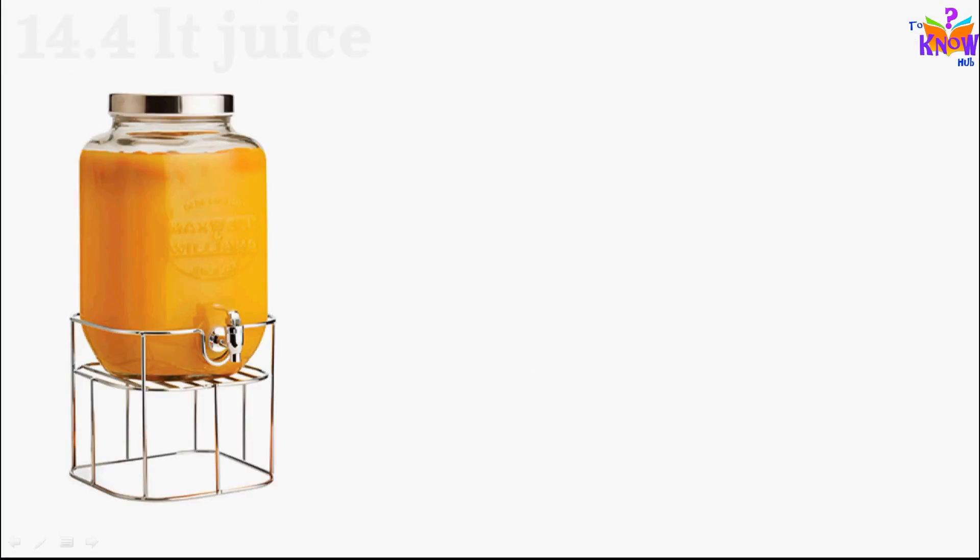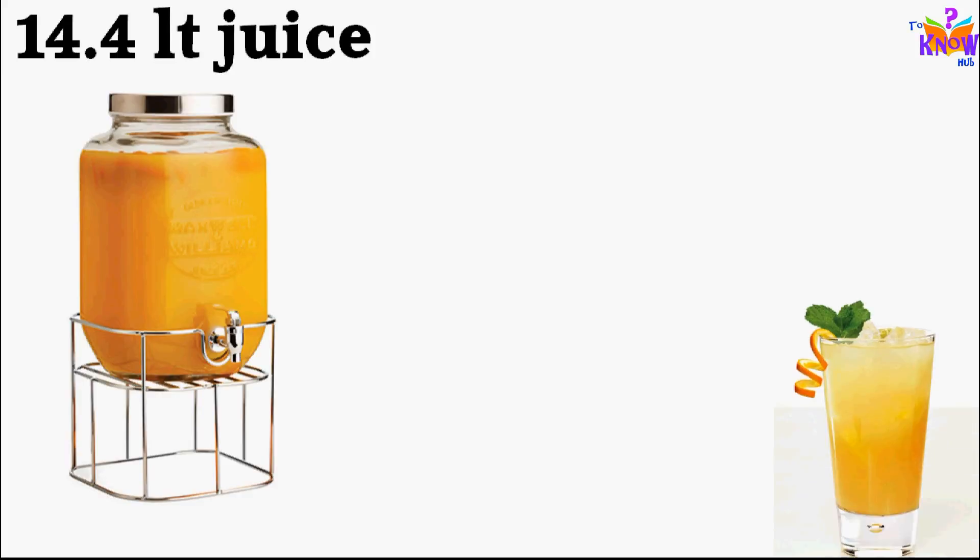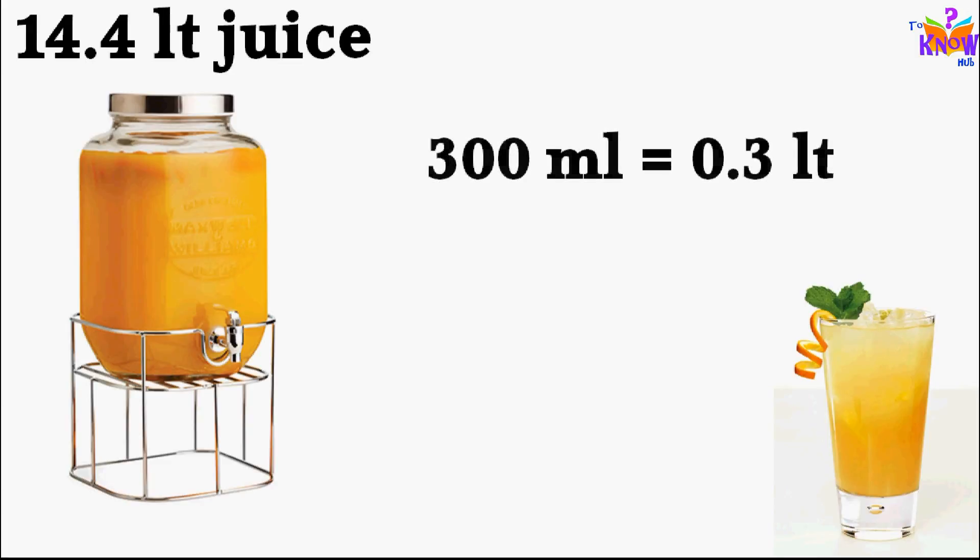Now what if the divisor has decimal too? Like you have 14.4 liter of juice. You are serving 18 300 ml glasses, means 0.3 liter in each serving. We know thousand milliliter equals to 1 liter, so 300 ml means 0.3 liter.